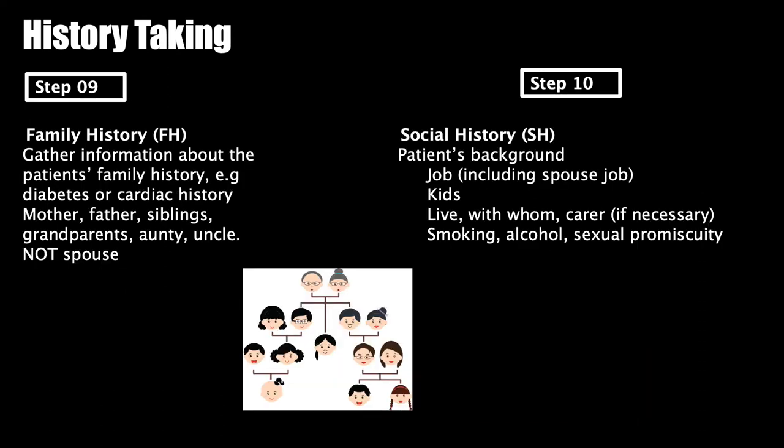Next, ask about the patient's family history — parents, siblings, grandparents, or any maternal or paternal uncle or auntie who have any illnesses, as some illnesses have genetic predisposition. After that, move on to social history: ask about the patient's background, occupation, spouse's occupation, children, where they live and the condition of the house, smoking history, alcohol consumption, and any history of sexual promiscuity.